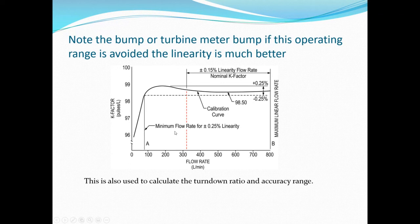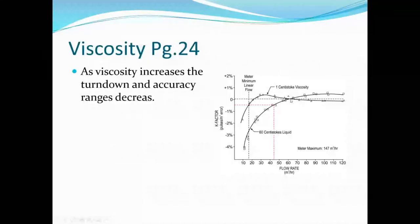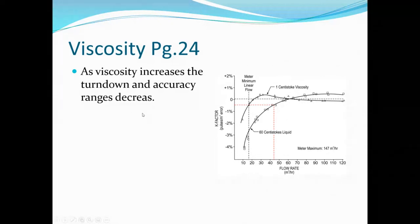Viscosity significantly affects turbine meter performance. As viscosity increases, the turndown ratio decreases and accuracy worsens — the meter has ever-changing accuracy throughout most of its range with only a small area where accuracy is good. So viscosity has a pretty significant negative effect on turbine meters.